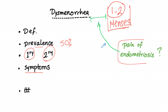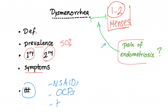Treatment of dysmenorrhea: we start with non-steroidals. We can try oral contraceptives, and if it's severe enough, we can do hysterectomy, but this is extremely rare.